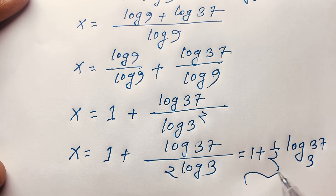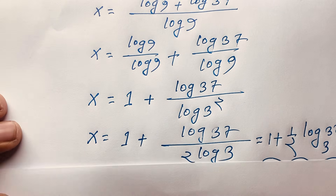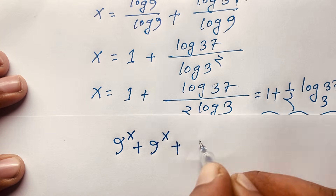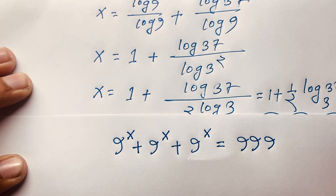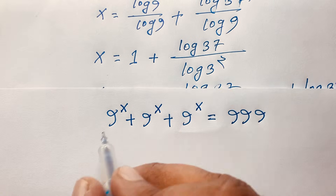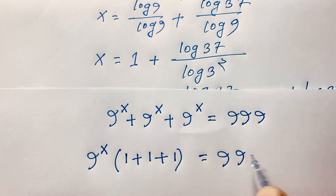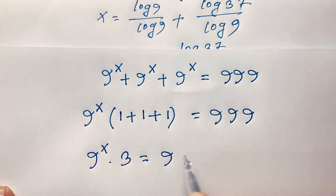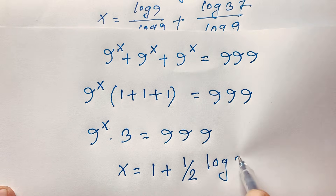This is the value of x in this exponential expression. Let's check our answer by substituting back into the original equation: 9^x plus 9^x plus 9^x equals 999. We can see that 9^x is common, giving 9^x times 3 equals 999. Recall that x equals 1 plus one-half log base 3 of 37.